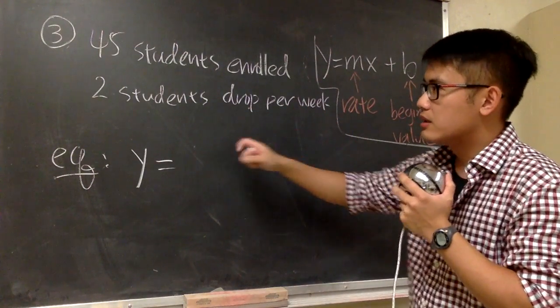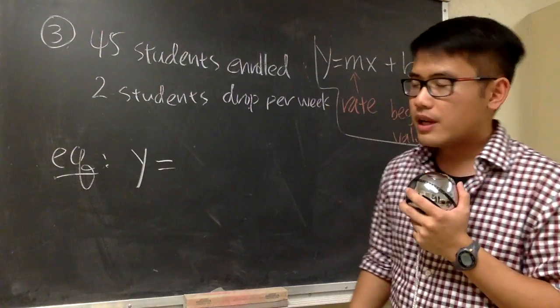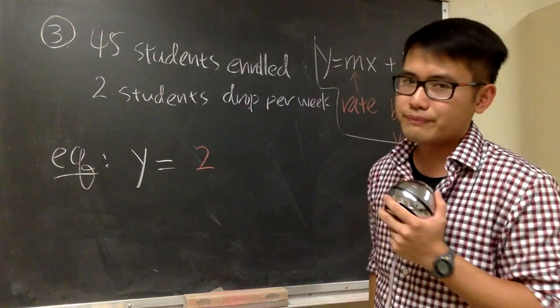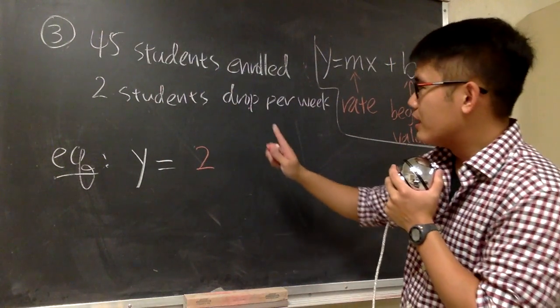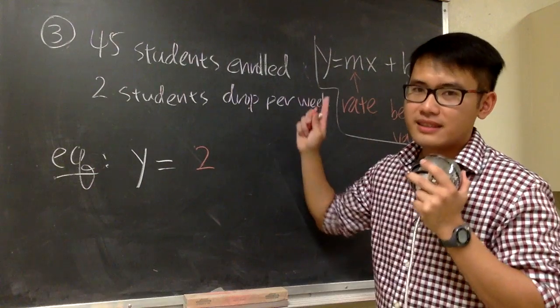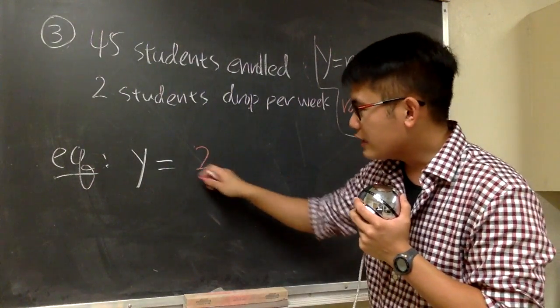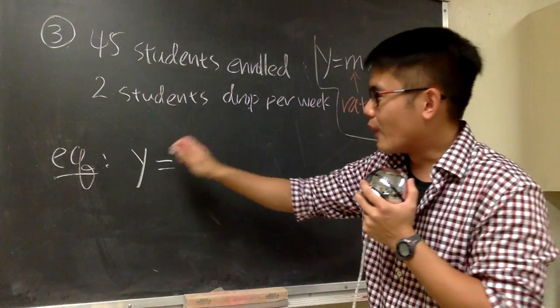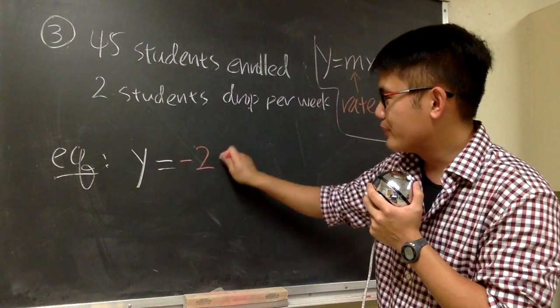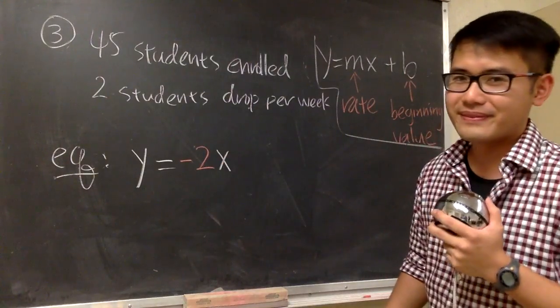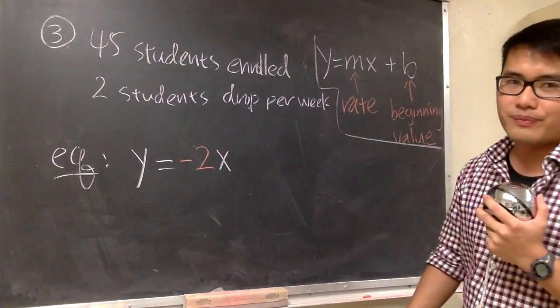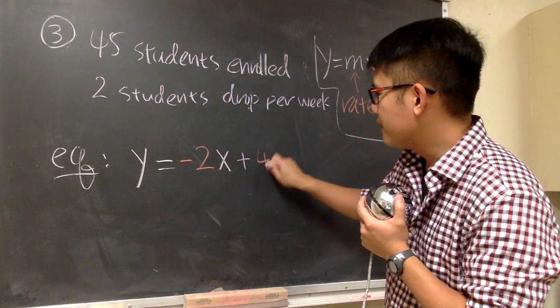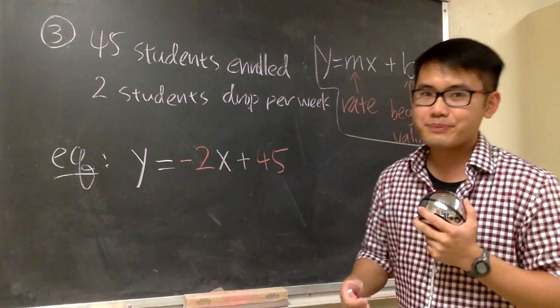Two students drop the class per week. Whenever it's the per something, this is the rate. But even though we have a 2 right here, is it just a 2 or something else? Well, we are getting less and less students, right? So, it's not just a 2, but rather we should have a negative 2. So, y is equal to negative 2x and what's the beginning value? It will be the 45. So, we add that 45 at the end. This is it.